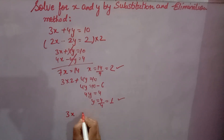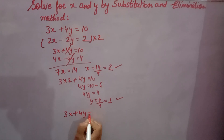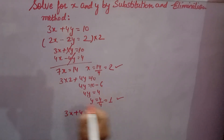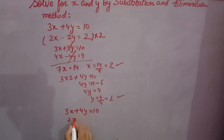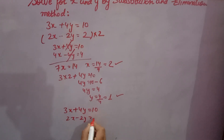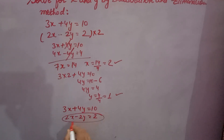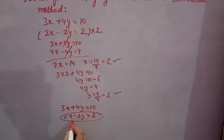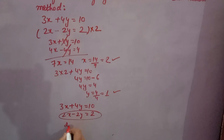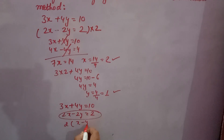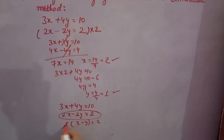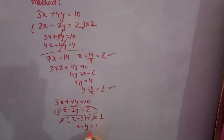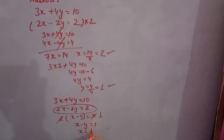Now for the substitution method, from one equation you take the value and put it into the second equation. Using both equations, from the second equation take 2 as a common factor to get x minus y equals 1. So x equals 1 plus y.